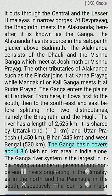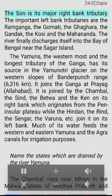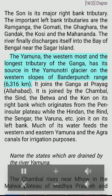The Ganga basin covers about 8.6 lakh sq km in India alone. The Ganga river system is the largest in India, having numerous perennial and non-perennial rivers originating in the Himalayas in the north and the peninsula in the south. The Son is its major right bank tributary. The important left bank tributaries are the Ramganga, the Gomti, the Ghaghara, the Gandak, the Kosi, and the Mahananda. The river finally discharges into the Bay of Bengal near Sagar Island.